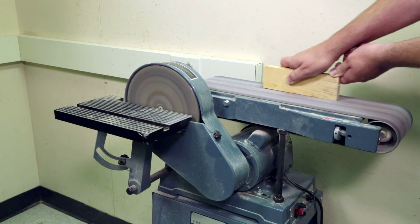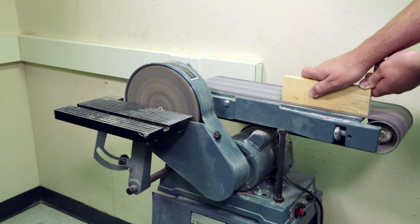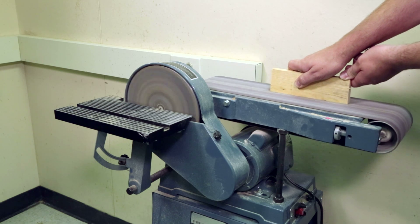The sander can be used to smooth saw-cut edges. Slowly move the piece across the width of the sanding belt to prevent clogging.